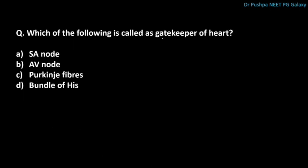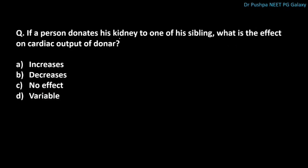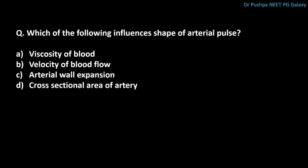Which of the following is called the gatekeeper of the heart? The correct answer is the AV node. The SA node is the pacemaker of the heart. The plateau phase of ventricular muscle is due to the opening of the calcium-sodium channel. If a person donates a kidney, the effect on cardiac output of the donor is a decrease. Which of the following influences the shape of the arterial pulse? The correct answer is arterial wall expansion.